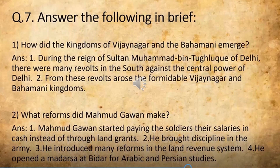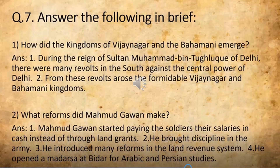Question number 7: Answer the following in brief. See the first question: How did the kingdoms of Vijayanagar and the Bahamani emerge? The answer is on the screen too: During the reign of Sultan Mahmud bin Tughluq of Delhi, there were many revolts in the south against the central power of Delhi. Once again I am repeating — during whose reign there were many revolts in the south against the central power of Delhi? You are going to take the options: Sultan Mahmud bin Tughluq or Mahmud Gawan, or a third option.